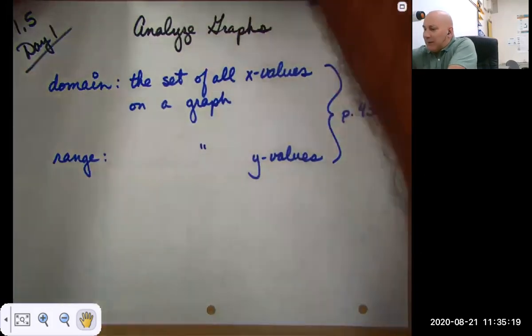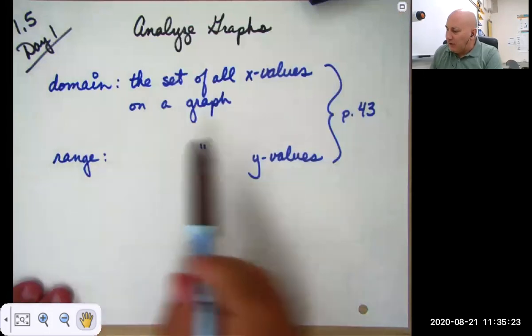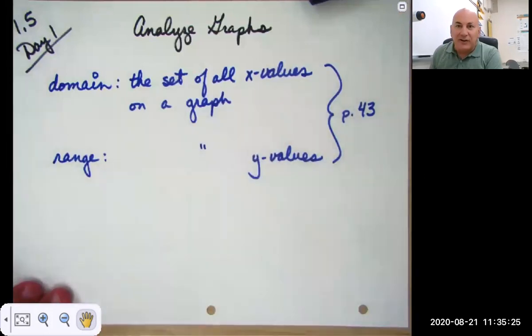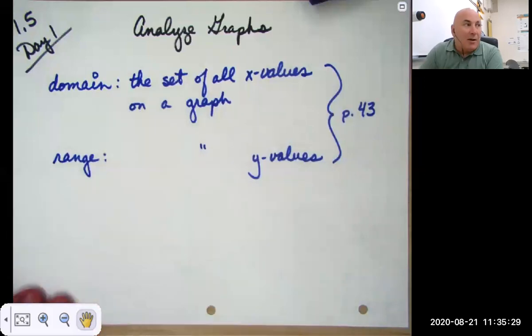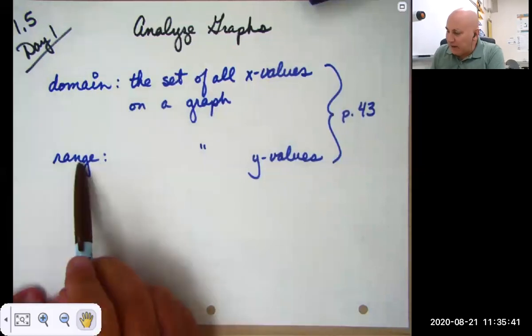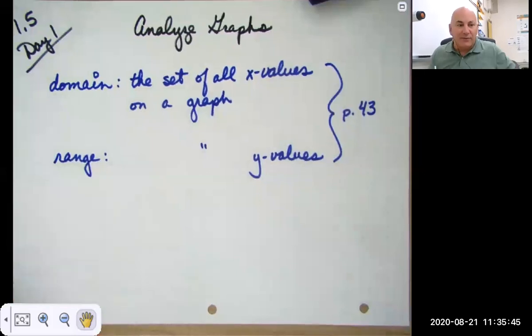So some definitions. On page 43 of the current text we're using, you'll find the definition of a domain. My definition is it's the set of all x values on a graph. So you take any graph, what x values are on that graph? That's your domain. And the range is the set of all the y values on the graph. There's really nothing more difficult than that.